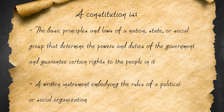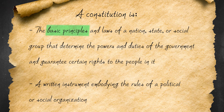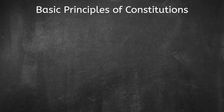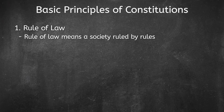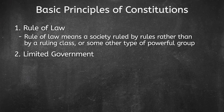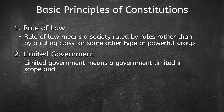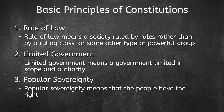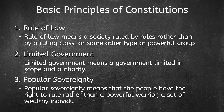Let's pick this definition apart. "Basic principles" — a constitution reveals to us our values and principles. Values and principles are things that are fundamentally important to us, such as equality and liberty. They create standards for both our behavior and our government's behavior. The basic principles of a constitution are: first, rule of law — a society ruled by rules rather than by a ruling class; second, limited government — a government limited in scope and authority; and third, popular sovereignty — meaning the people have the right to rule, rather than a powerful warrior, a set of wealthy individuals, or religious figures.